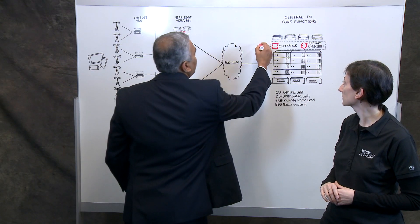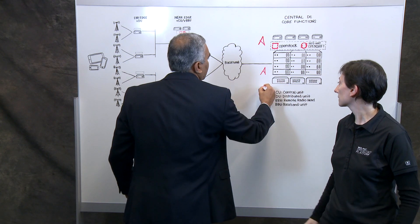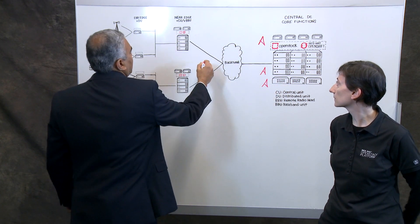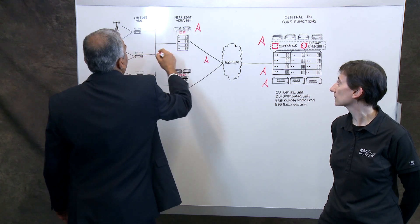You can automate components and provision and deploy components in the core. You can automate the networks, overlay and underlay networks, as well as the services and application.